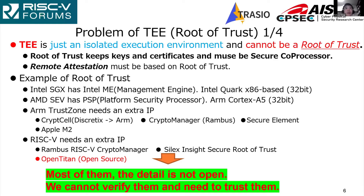From here, I will show four problems on TEE. The first one is root of trust. TEE is just an isolated execution environment and cannot keep keys and certificates. A secure processor as root of trust is needed. Remote attestation, which I explain later, must be based on root of trust.